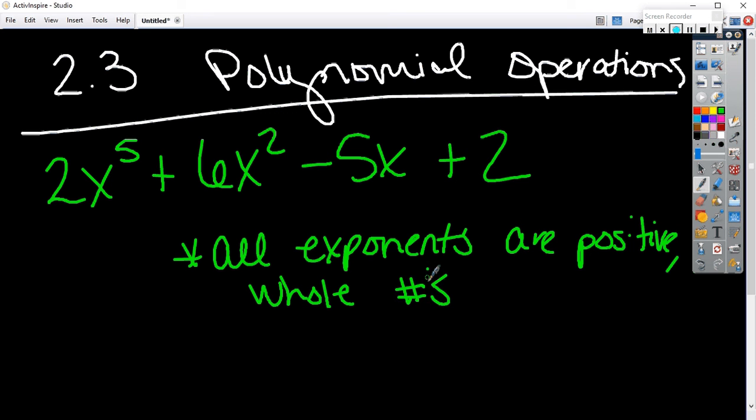You can have negative fractions, irrational numbers, and all that as the coefficients here, but if you're talking about exponents on the variable, these, they have to be positive whole numbers to be a polynomial.